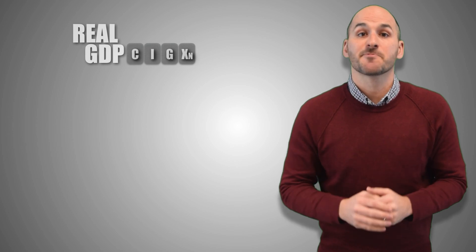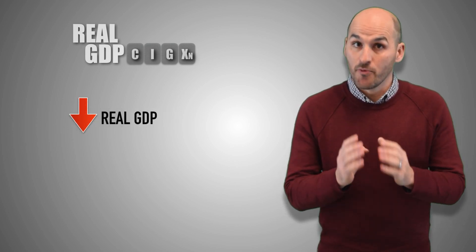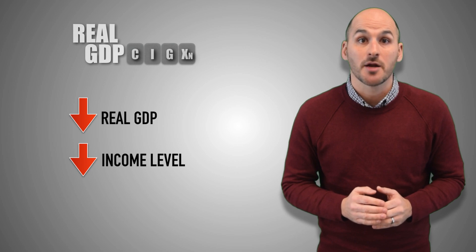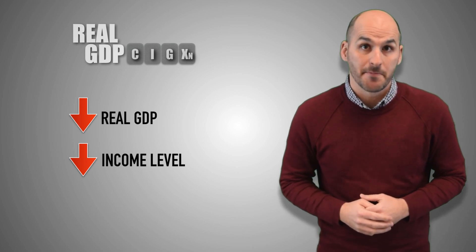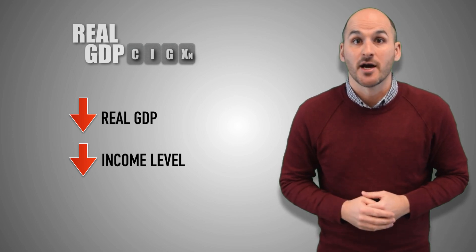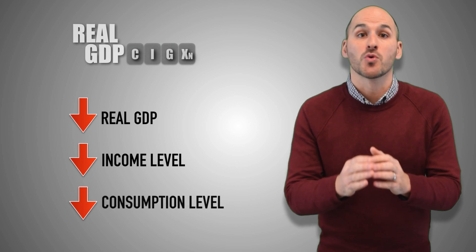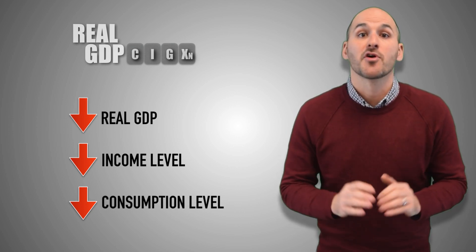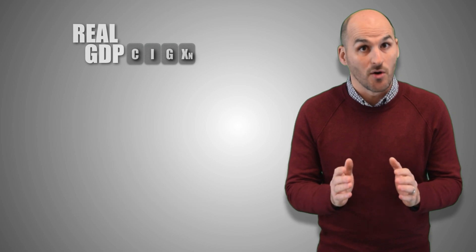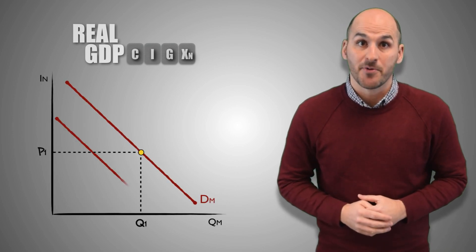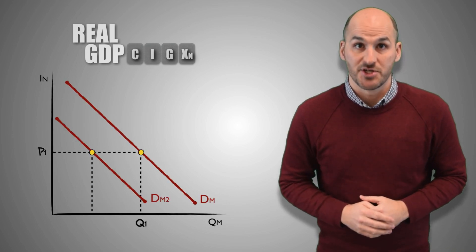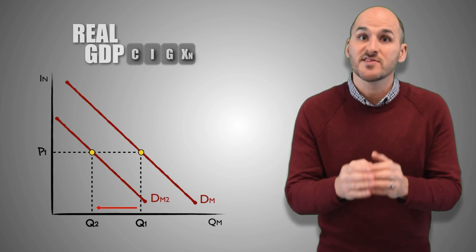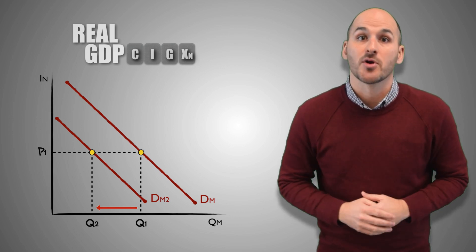If an economy experiences economic contraction and real GDP output decreases, income levels will fall as fewer workers find employment. With less disposable income to spend, consumers will buy fewer goods and services, which requires lesser quantities of money no matter the nominal interest rate. So a decrease in real GDP output leads to a decrease in consumption, which causes a decrease in money demand, meaning lesser quantities of money are demanded at every nominal interest rate.